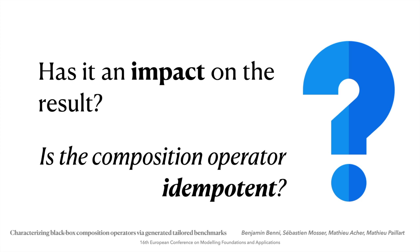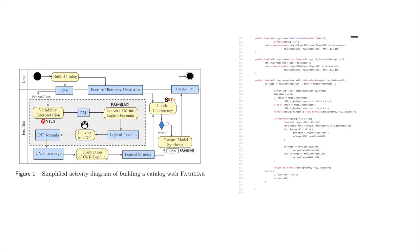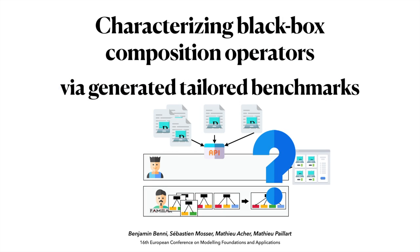How can one ensure that? It cannot be proven by classical model transformation analysis, given the various types of transformation involved and even the non-deterministic steps. On the other hand, state-of-the-art static analysis on the core are not applicable given its complexity, and that it does not follow any particular framework or guidelines. So our context is that we need to assess algebraic properties of the black box composition operator — here, the merge operator of the Familiar tool suite. We need to characterize such black box composition operators in a domain-independent way, and this is the problem we are trying to solve.